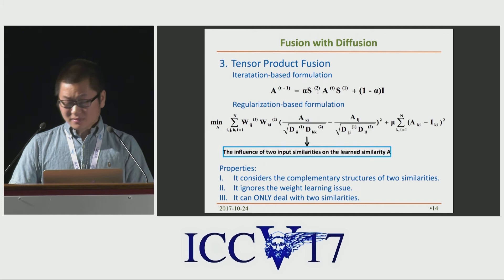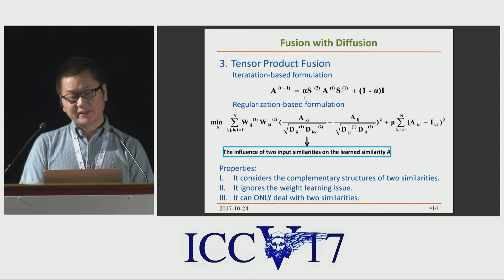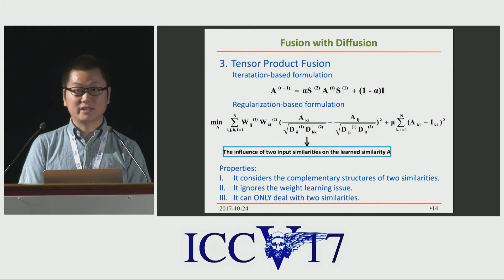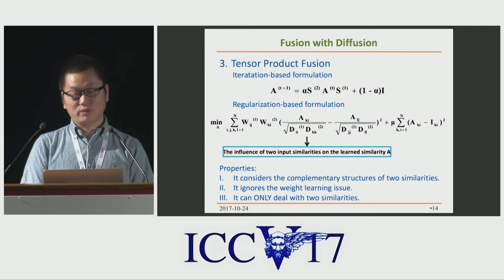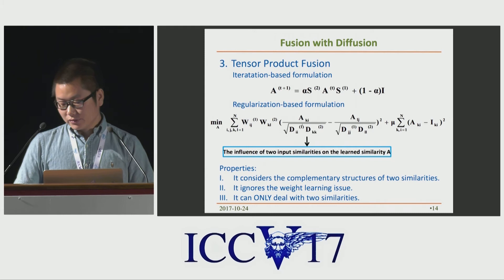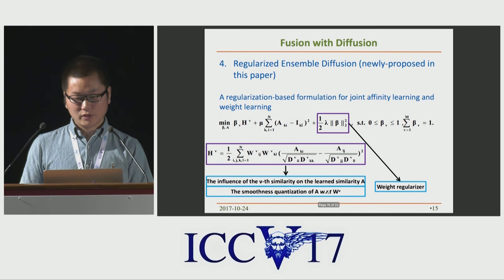The third option is tensor product fusion. Its iteration-based formulation, as the first equation shows, can only deal with two similarities, S1 and S2. A key observation in this paper is that the limit of this iteration can be derived by solving a convex optimization, as the second equation shows. The second equation actually defines the joint influence of the two input similarities, W1 and W2, on the learned similarity A. So tensor product fusion considers the complementary structures of two different similarities. However, it is still ignoring the weight learning issue.